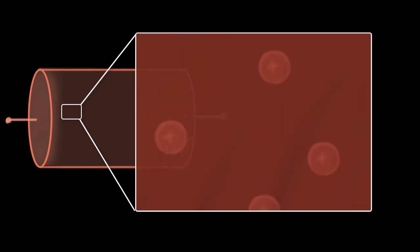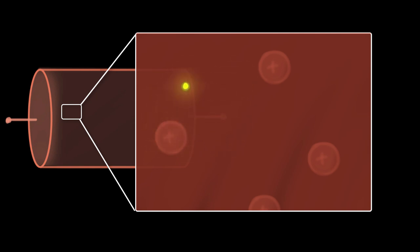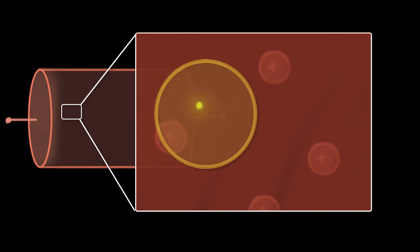We've seen that metals contain free electrons which move at extremely high speeds due to thermal energy. Without a battery, this motion is completely random, and as a result, because of a lot of collisions that keep happening, on a large scale these electrons don't go anywhere. And as a result, without a battery, we don't get any current.